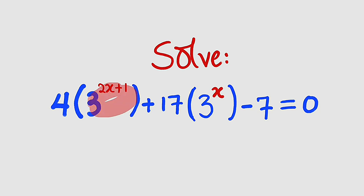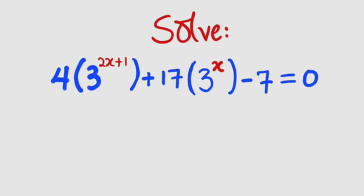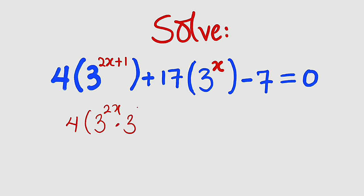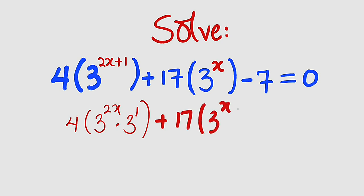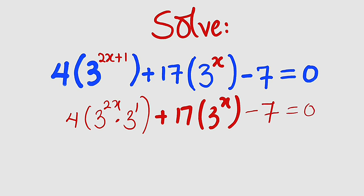Let me start by simplifying this, applying one of the laws of indices to split the exponents. So we have 4 multiplied by 3 to the power of 2x, then multiplied by 3 to the power of 1, then plus 17 multiplied by 3 to the power of x, then minus 7, the whole of this equal to 0.